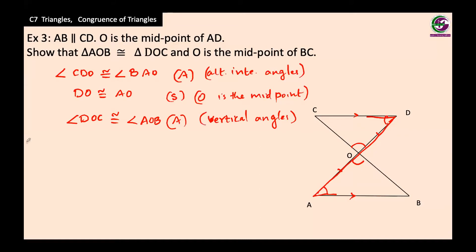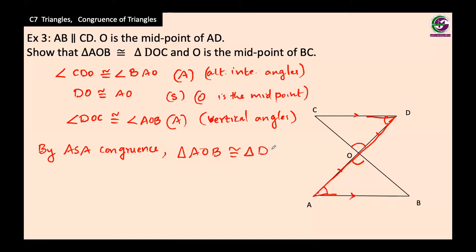By ASA congruence rule, we can say that triangle AOB is congruent to triangle DOC. Now we also need to show that O is the midpoint of BC, meaning BO equals OC. Notice that OB and OC are the last two letters of the first and second triangles respectively.